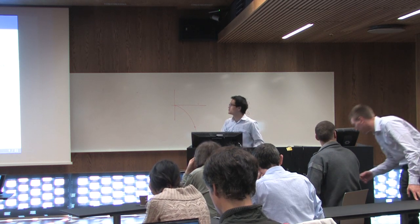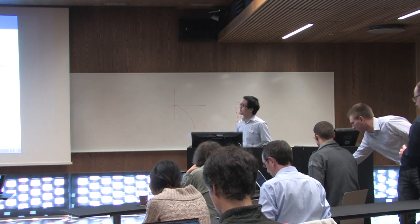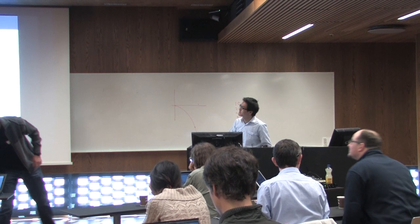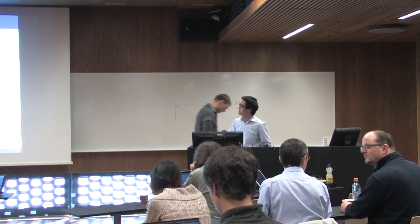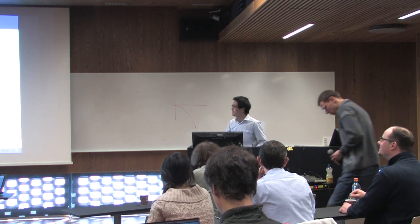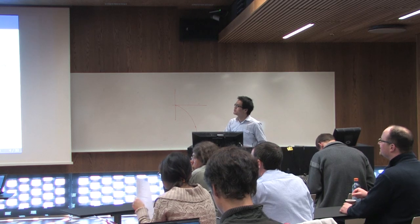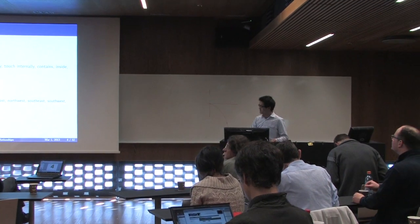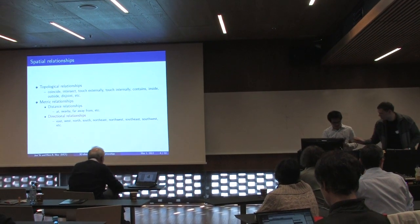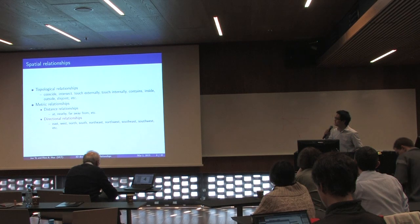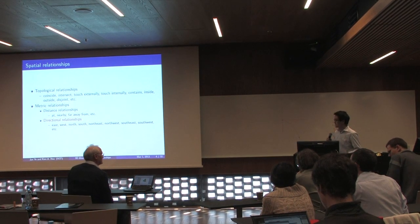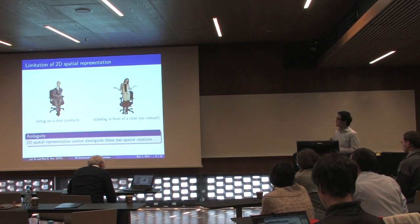Spatial relationships can be roughly categorized into two groups. One is topological relationships, which have several instances such as coincide, touch externally, touch internally, contain, inside, outside, and so on. The other category is metric relationships, which can be further divided into two subgroups. One subgroup is directional relationships, such as the eight geographic directions: north, east, west, south, southeast, and so on.